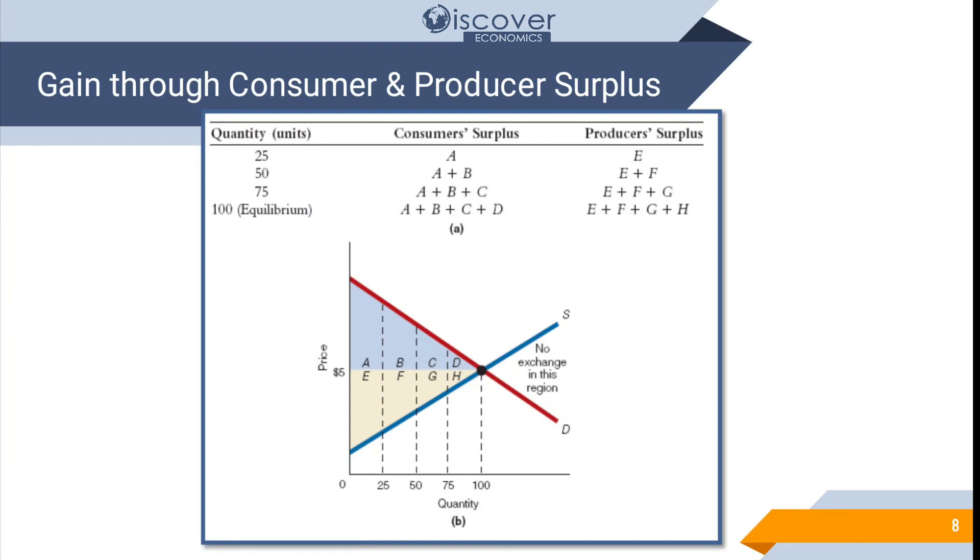Then go to producer surplus. It was at E. Then it moved to E plus F. Then moved on to E F G. Then E F G H. So the total surplus over here is 100. So 100 is with consumer surplus and 100 is with producer surplus.